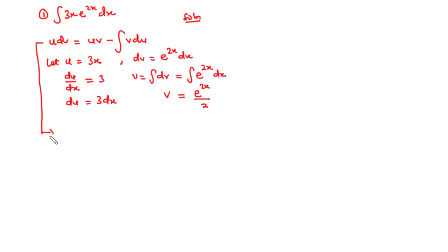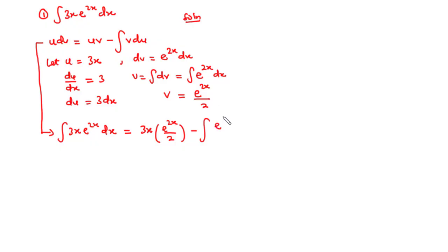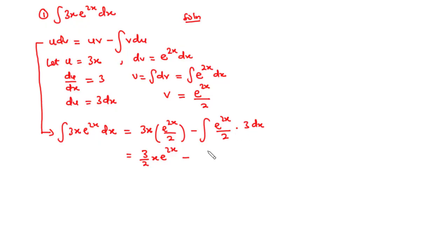Using the formula, the integral of 3x times e to the power 2x dx equals u times v minus the integral of v du. That gives us 3x times (e to the power 2x divided by 2) minus the integral of (e to the power 2x divided by 2) times 3 dx. Multiplying through, we get 3 over 2 times x times e to the power 2x minus the integral, and since 3 over 2 is a constant we can pull it out.